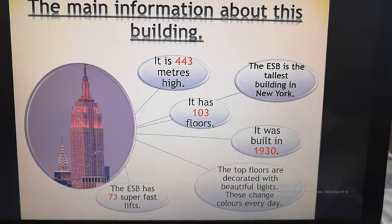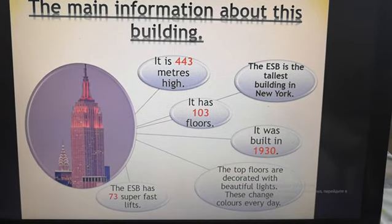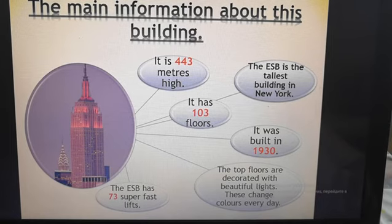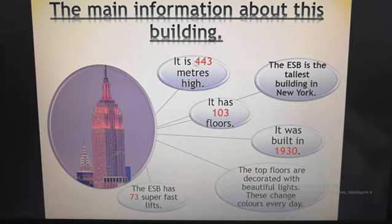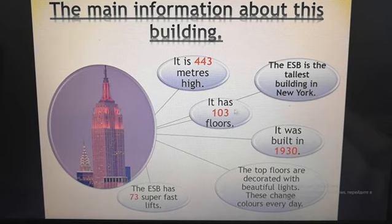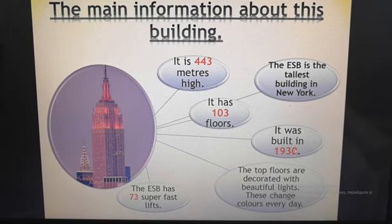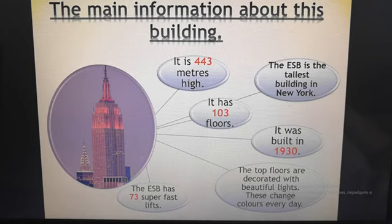This is the main information about this building. The Empire State Building is the tallest building in New York. It is four hundred and forty-three meters high. It has one hundred and three floors. It was built in 1930.